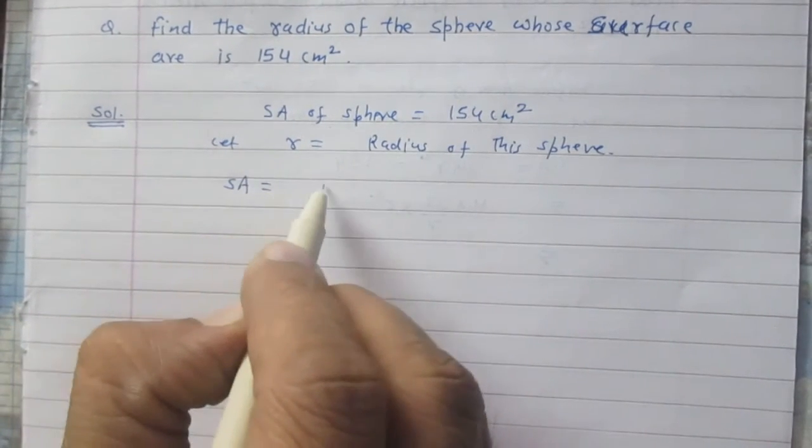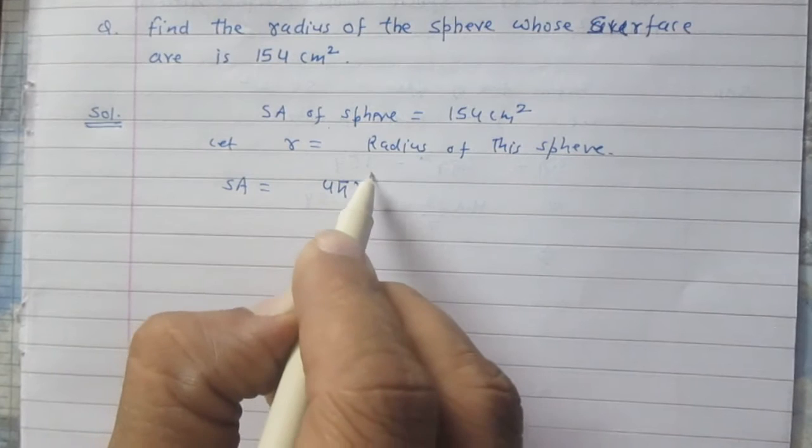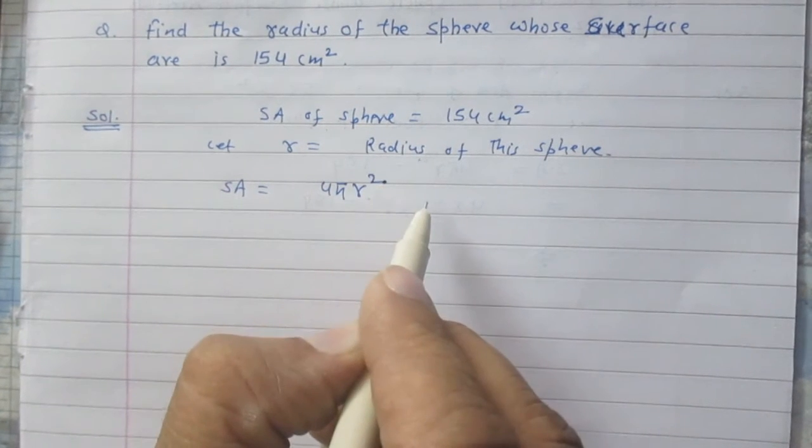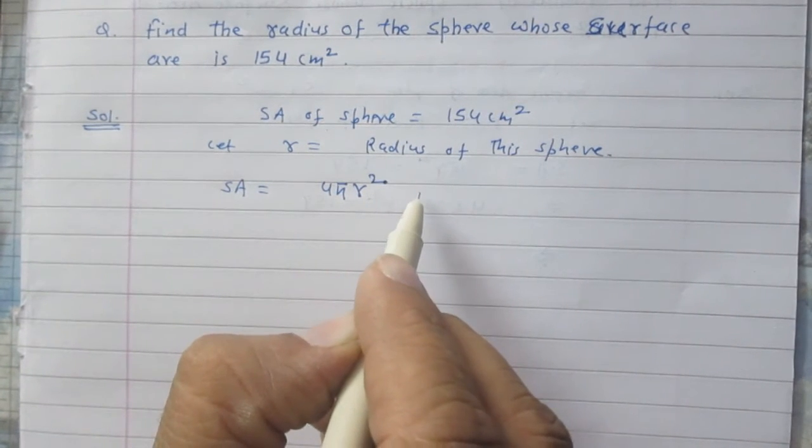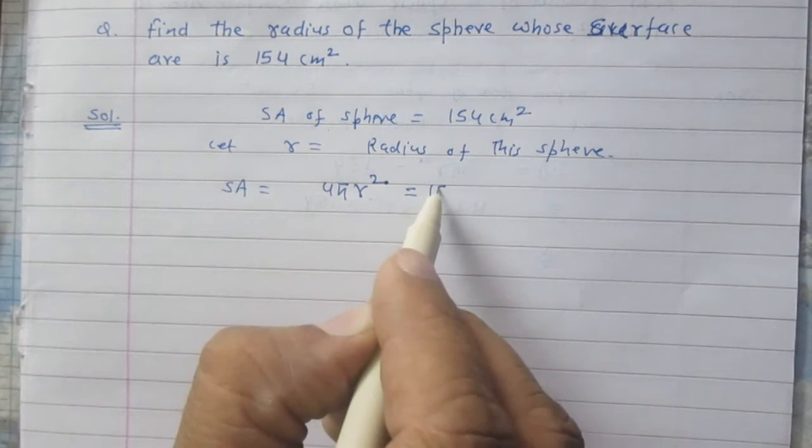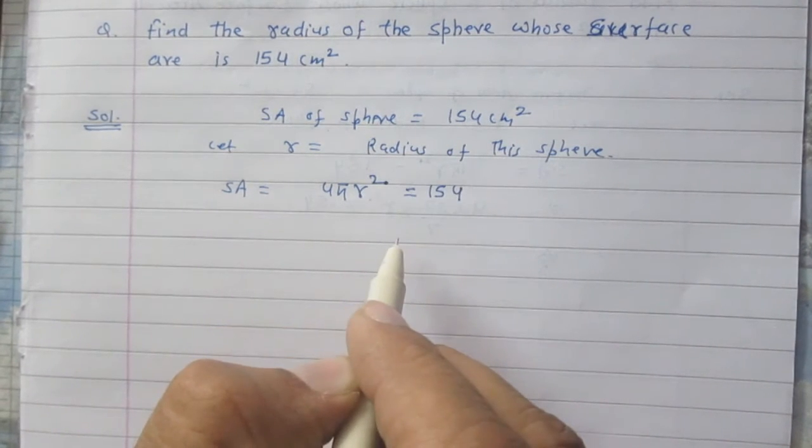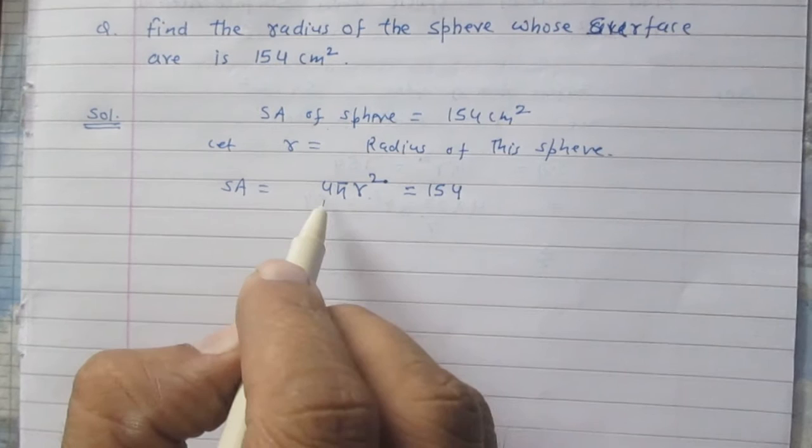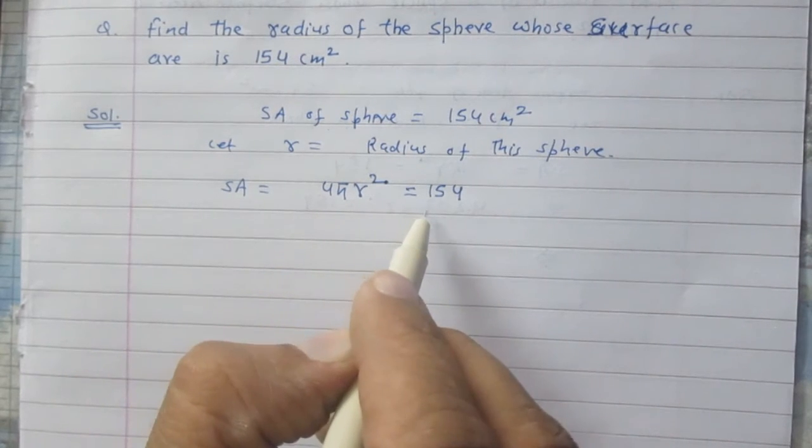surface area of the sphere is 4πr² and according to the information given in this question, it is 154 cm². So we will get 4πr² = 154.